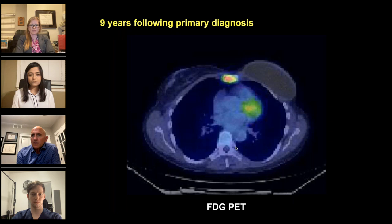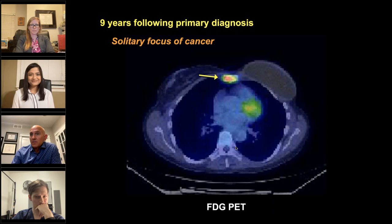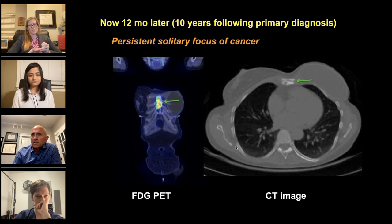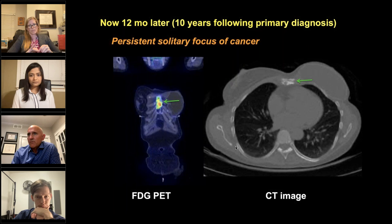Here's a patient with metastatic breast cancer. A mastectomy had been performed nine years after initial diagnosis, but there was a solitary focus of cancer that had been treated with definitive SBRT, yet still had residual disease. On coronal imaging, the lesion is encompassing much of the sternum, and you can see the underlying destruction on the adjacent CT image. She could have had a sternal resection, but that would be incredibly morbid.